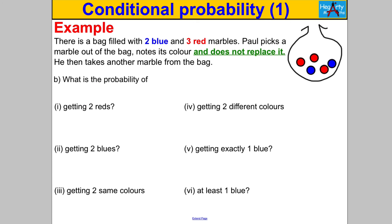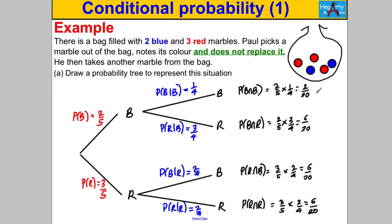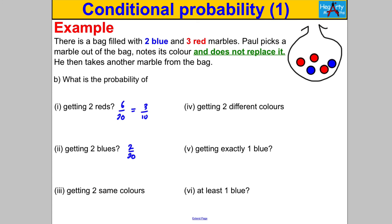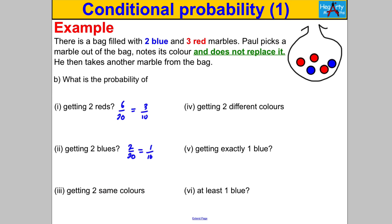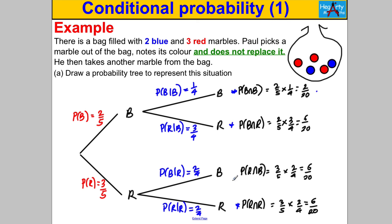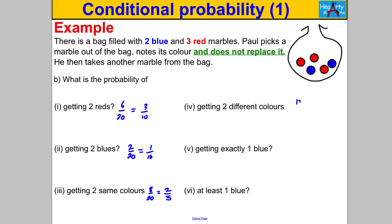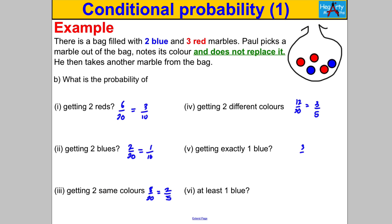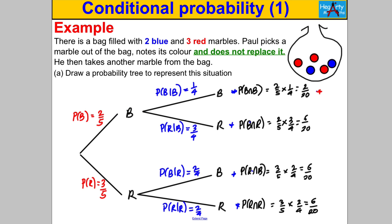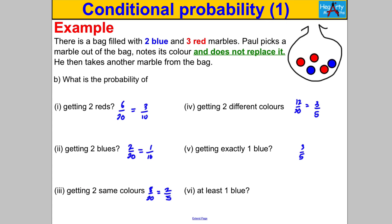Having drawn the probability tree we can answer various questions. The probability of two reds: six over twenty, which simplifies to three tenths. The probability of two blues: two twentieths, simplified accordingly. The probability of two of the same colour: two twentieths plus six twentieths equals eight twentieths, which simplifies to two fifths. The probability of two different colours: six twentieths plus six twentieths equals twelve twentieths, simplifying to three fifths. Exactly one blue is also three fifths. At least one blue is fourteen out of twenty, which simplifies to seven tenths.